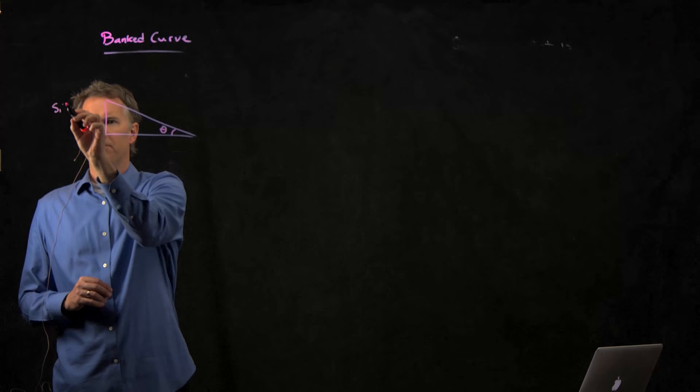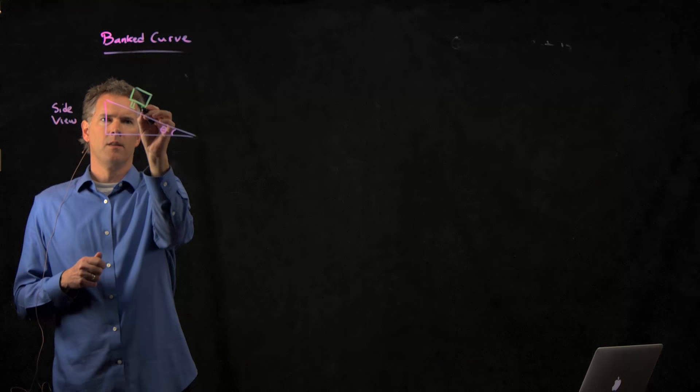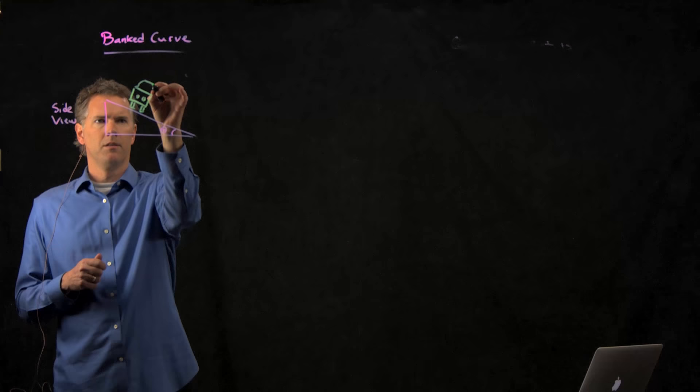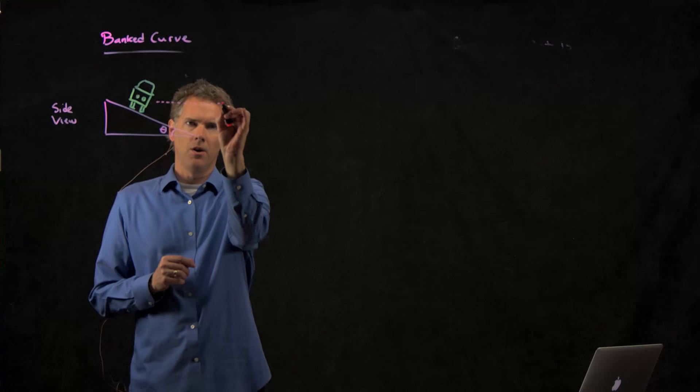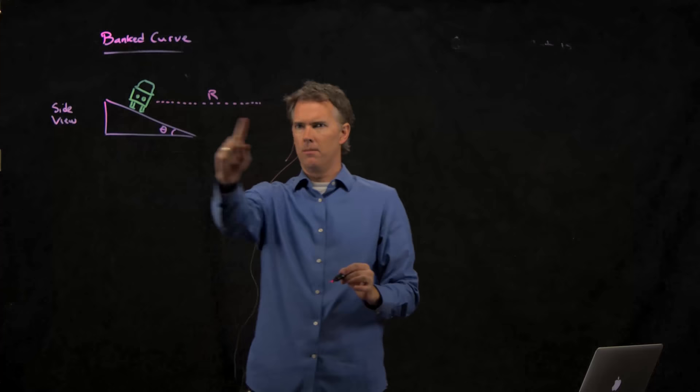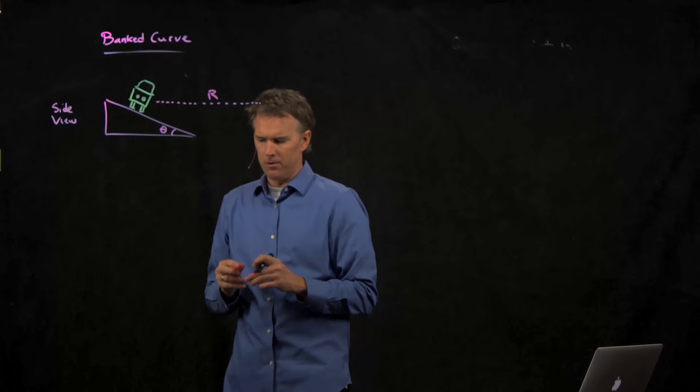So here's your banked curve. This is the sort of side view or the end view. Our car is right here. There's the wheels. Here's the headlights. Here's the top of the car. And this thing is coming towards you like that, which means it's going around a radius R like so. And this is the car on the banked curve going around like that.